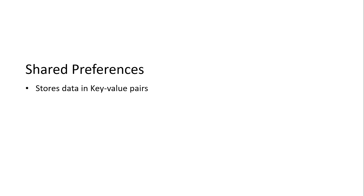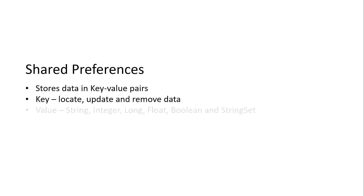Today is all about shared preferences. Shared preferences stores data in the form of key-value pairs. The key is used to locate the data, update it, and even remove it. The value is in the form of a primitive data type — it can be int, long, float, boolean, string, and even string set. String set is nothing but a set of strings.